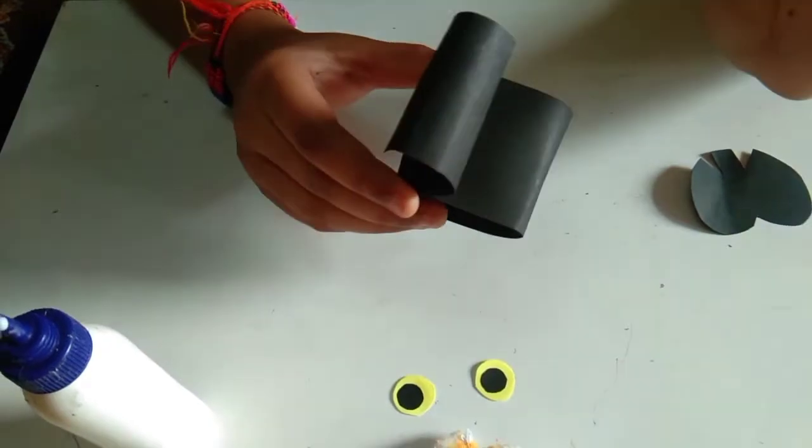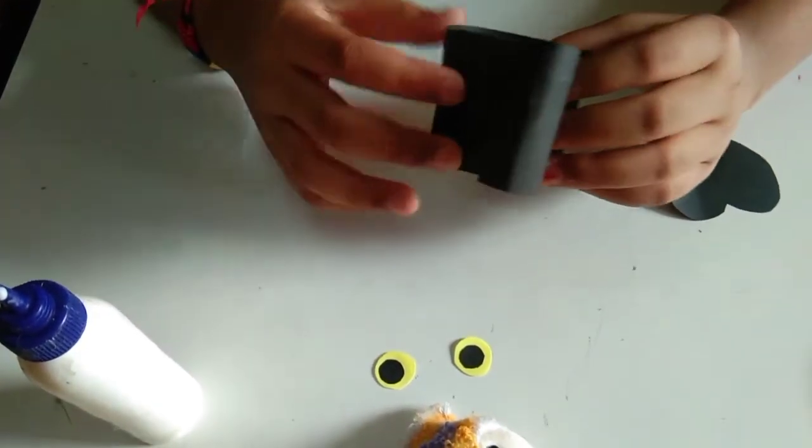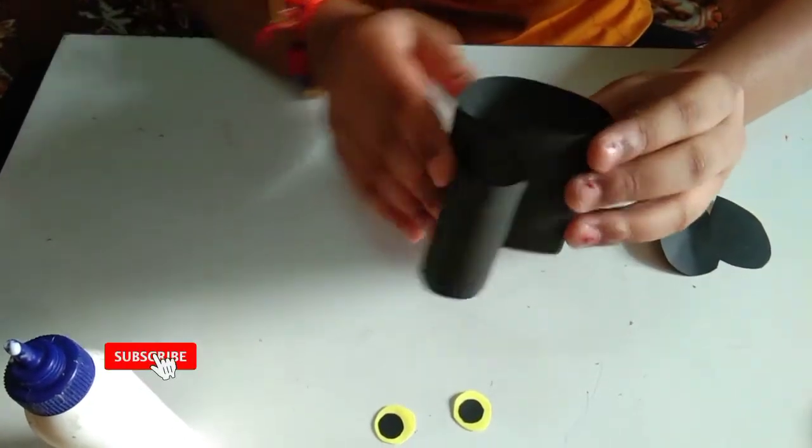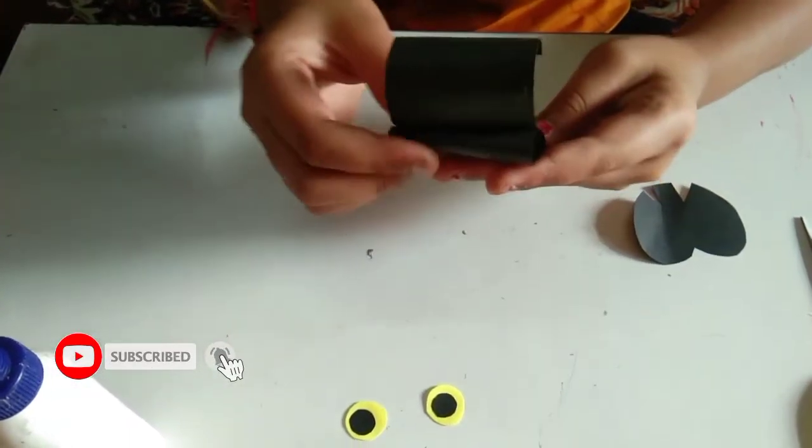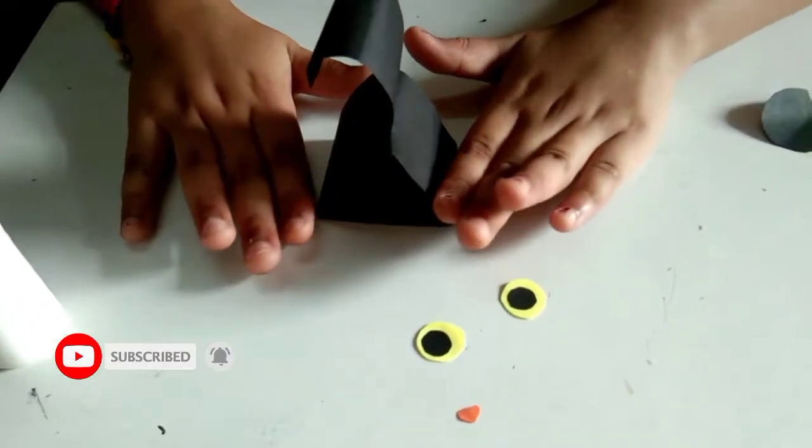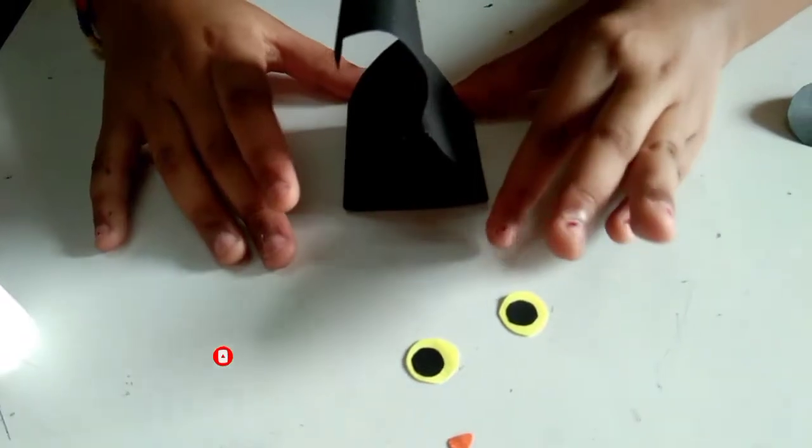Now I have finished doing the roll. Then we have to fold this like a triangle. In this triangle shape, we have to do like this.